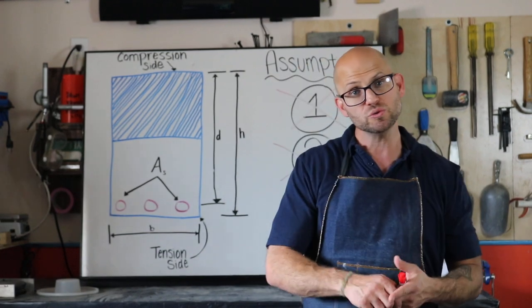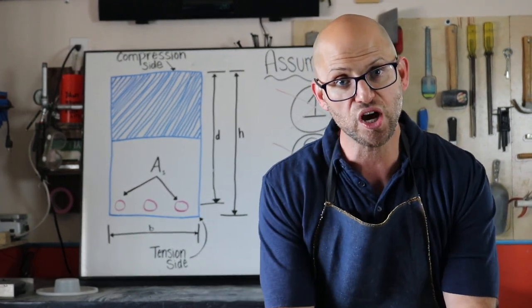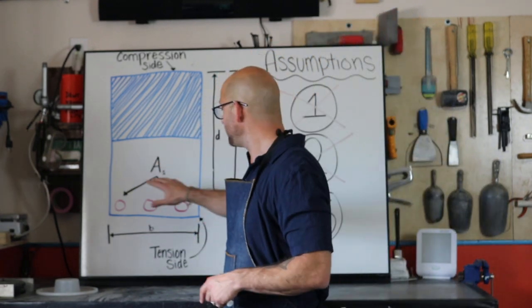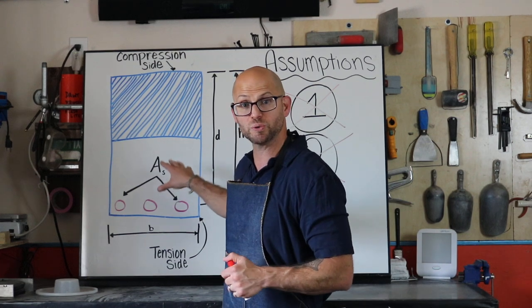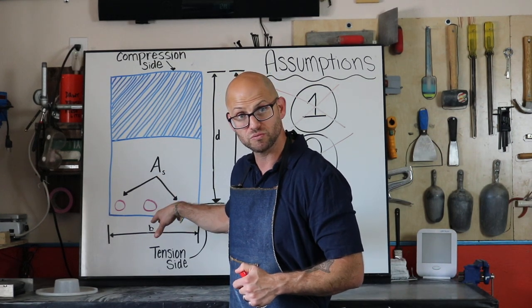If I start losing concrete, I start losing two things. The geometry or the mass of concrete that creates my compression zone, and then the concrete that's going to protect the steel in my tension zone, right?